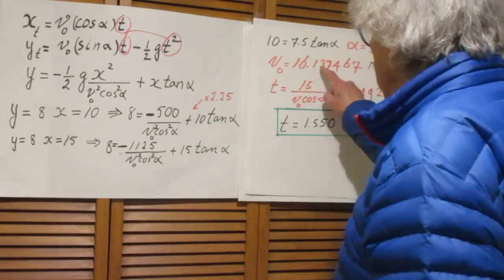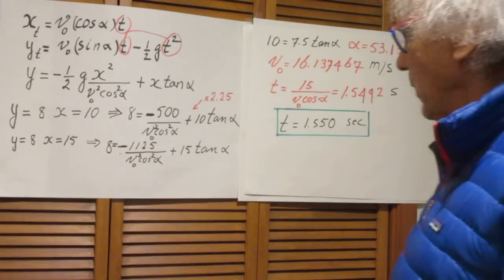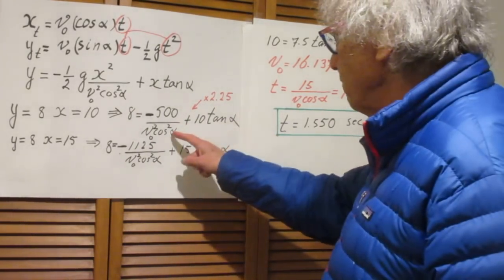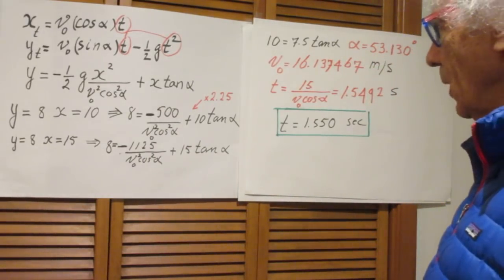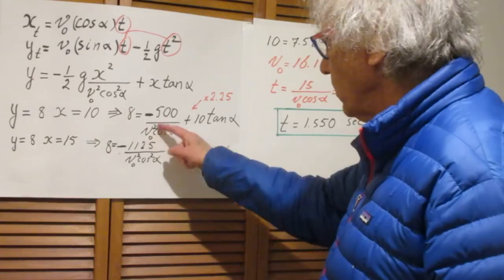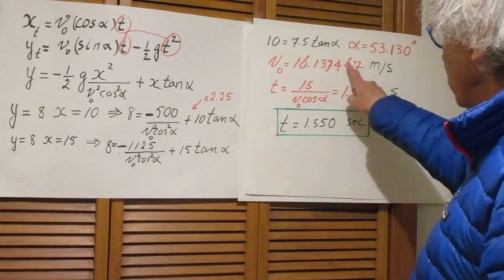We can calculate now what the speed is. We go back to this equation. You know alpha. And so you immediately find what V0 is. You can also use this equation, but this one is fine. You find that number.